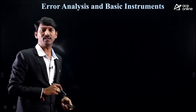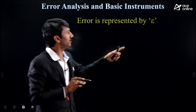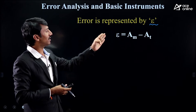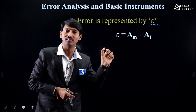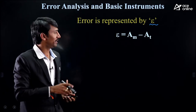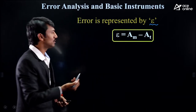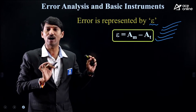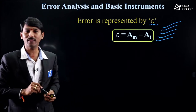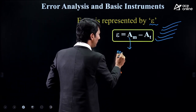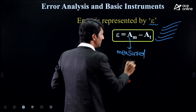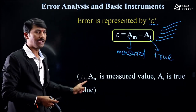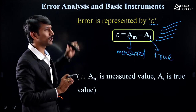Error is represented by the symbol epsilon. The formula is: error = A_m minus A_t. This is the basic formula of error — always the difference from measured value to true value, that is A_m minus A_t. A_m is the measured value and A_t is the true value. This is the fundamental point required in the error analysis chapter.